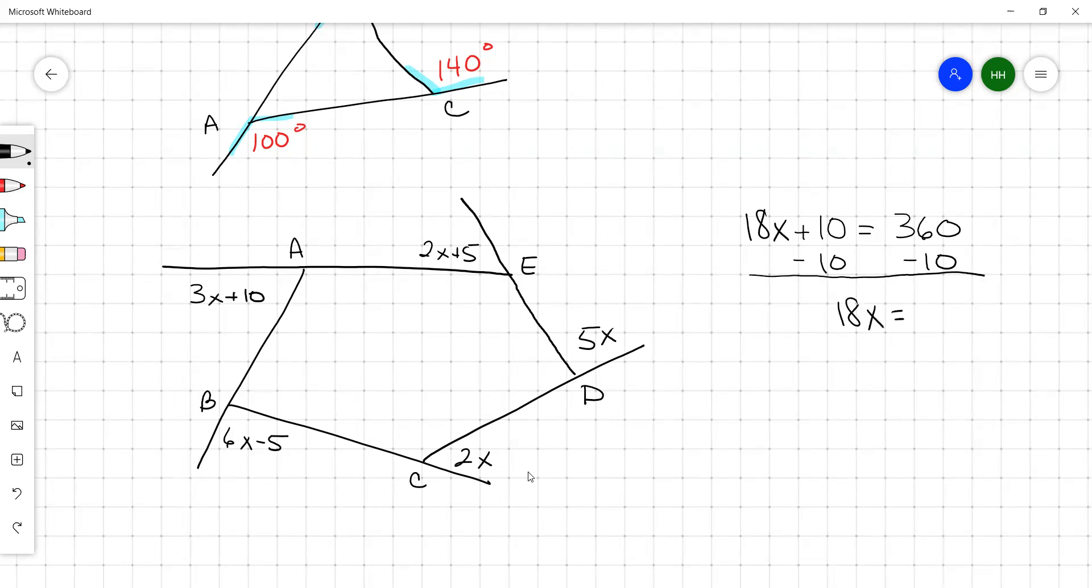So you subtract 10. So 18x equals 360 minus 10 is 350. And divide by 18. So x equals 19.4. There's what your x equals.